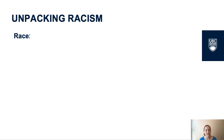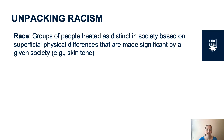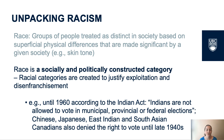To understand racism, we first have to unpack some key terms. First and foremost, we have to understand what constitutes a race. A race is a group of people treated as distinct in society based on superficial physical differences that are made significant by a given society — for example, skin tone. Race doesn't reflect consistent genetic differences between groups of people. Rather, race is a socially and politically constructed category. Racial categories are often created to justify exploitation and disenfranchisement.